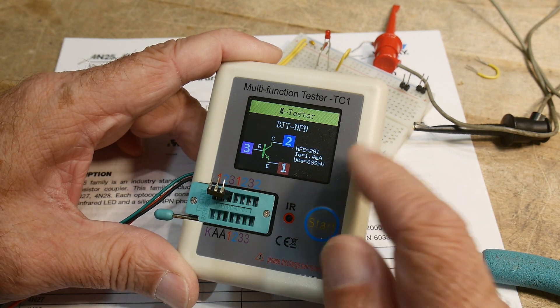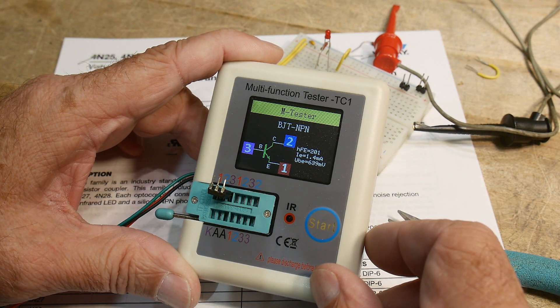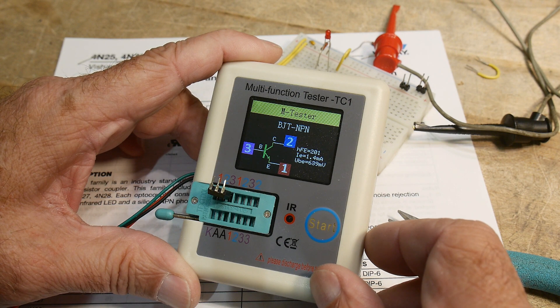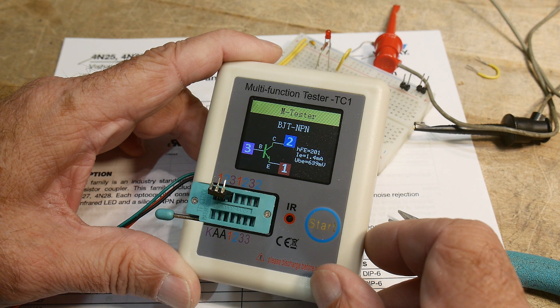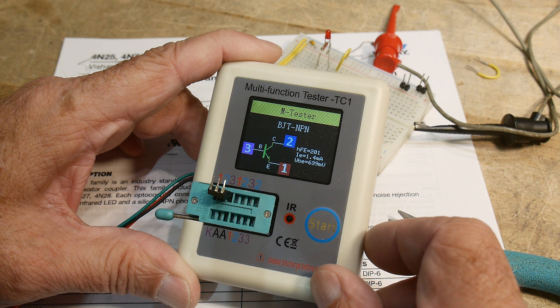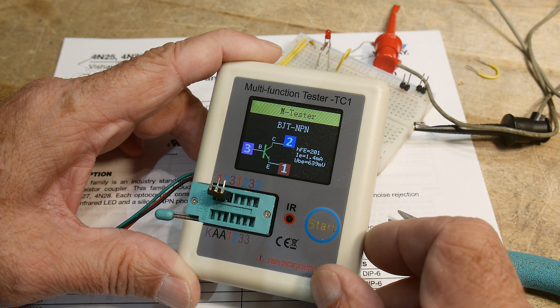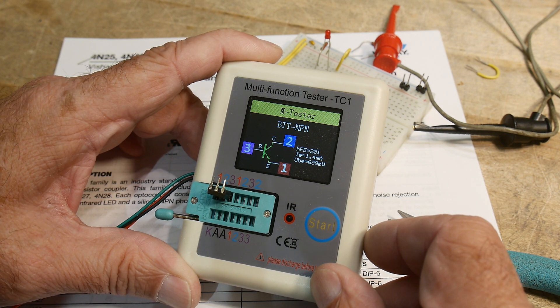And sure enough, it has an HFE of 200, otherwise known as beta. 1.4 amps, VBE, 0.6. All right. Interesting. Okay.